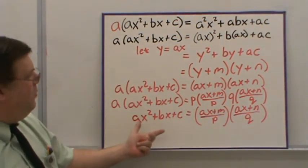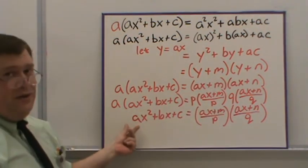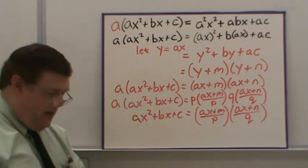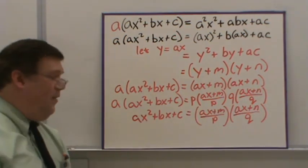That only works if P times Q happens to give you your A value. And when you see some examples work out like this, you'll find out that that happens quite often.